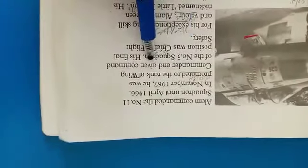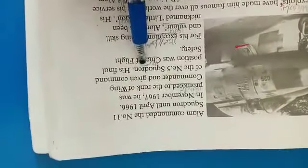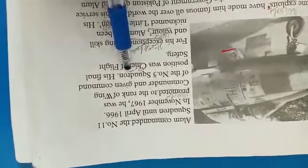In November 1967, he was promoted to the rank of wing commander and given command of the number 5 squadron. In November 1967, he was given the rank of wing commander and squadron 5 ki command.